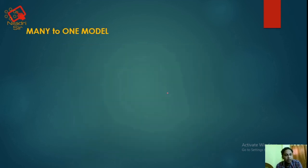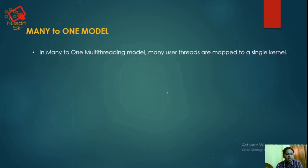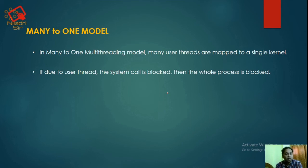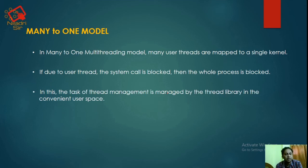Next, the many-to-one model. In the many-to-one multithreading model, many user threads are mapped to a single kernel thread. If one user thread makes a blocking system call, then the whole process becomes blocked. The task of thread management is handled by the thread library in the user space.